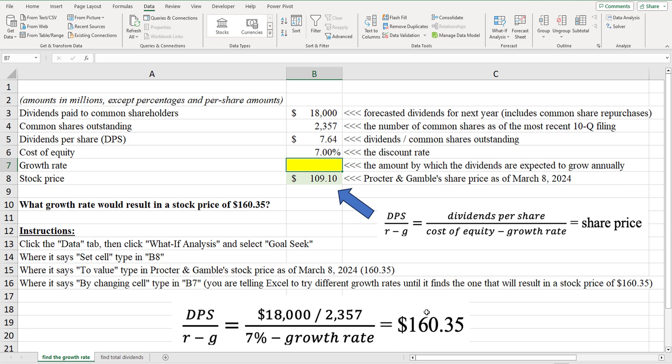Okay. We know that the share price was $160.35. That's the most recent share price as of when I'm making this video. When you watch the video, the share price might be very different. But as of March 8th, 2024, $160.35 a share.